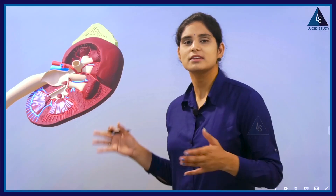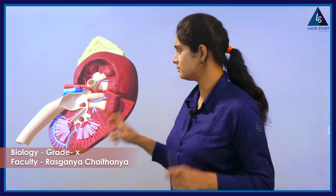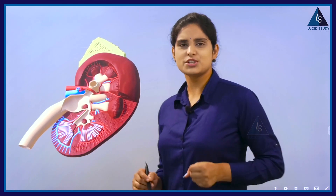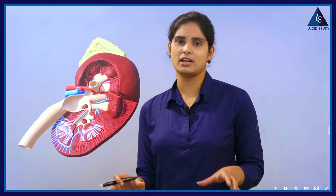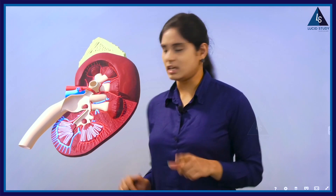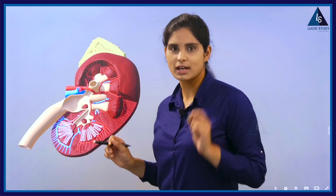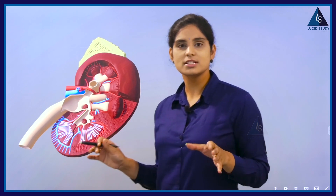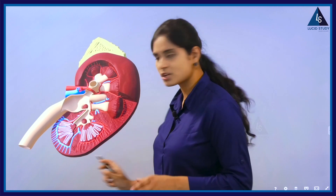This is how the kidney looks like. As you can see here, this is the internal structure of the kidney. First, let us talk about the basic features of the kidney. The first thing is shape — it's a bean-shaped structure.